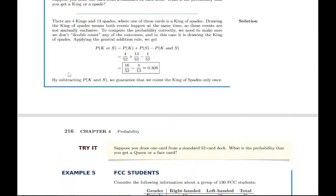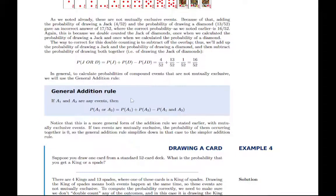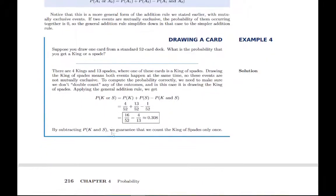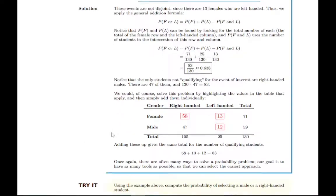Notice that if the events are mutually exclusive, this general rule still works. Because the probability that both of them happen is zero, so you just add their probabilities and subtract nothing — which gives you the earlier addition rule. This is why we call it the general addition rule: it works either way, but we specifically need to use it when there is some overlap between the two categories.